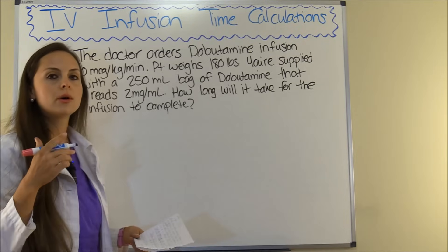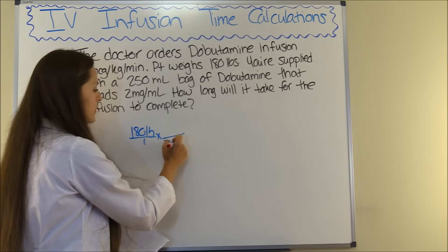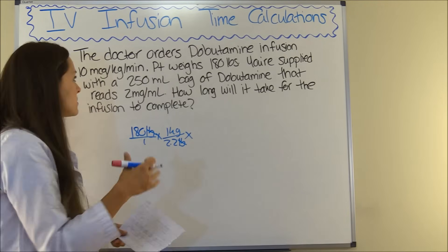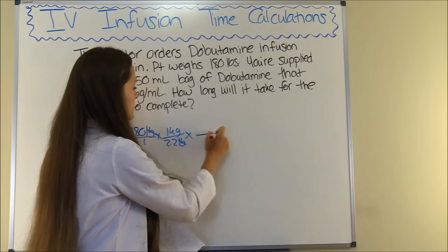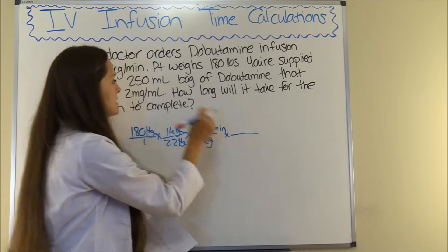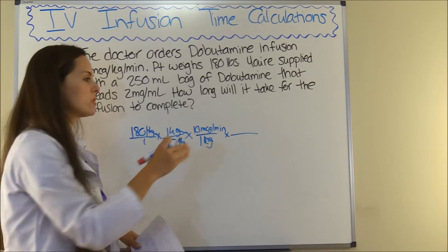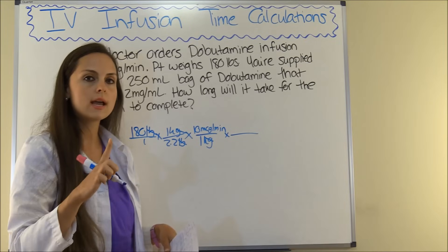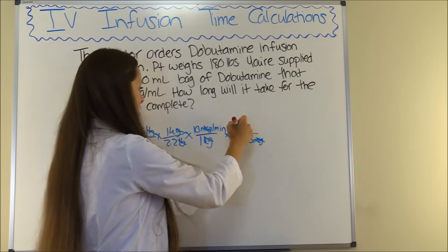Let's set up our problem using dimensional analysis. The patient weighs 180 pounds, and we know from the metric table that 2.2 pounds equals 1 kilogram — so pounds cancels out. Now we plug in what the physician ordered: for every kilogram, the patient gets 10 micrograms per minute of dobutamine, so 1 kilogram equals 10 micrograms per minute. Kilograms cancels out. Now we need to convert because our supply is in milligrams, not micrograms. From the metric table, there are 1,000 micrograms in 1 milligram — so micrograms cancels out and we're left with minutes equal to 1 milligram.